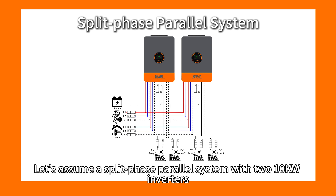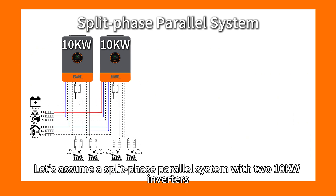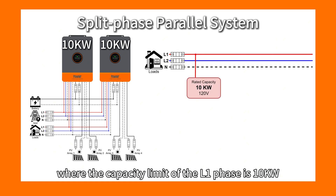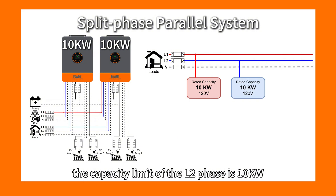Let's assume a split-phase power system with two 10kW inverters, where the capacity limit of the L1 phase is 10kW and the capacity limit of the L2 phase is 10kW.